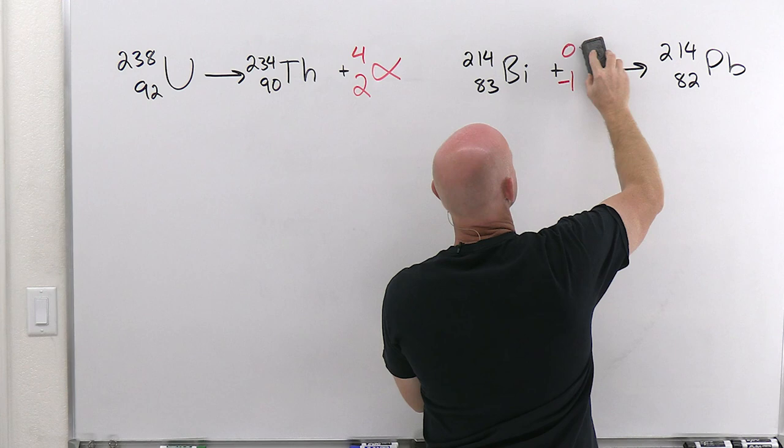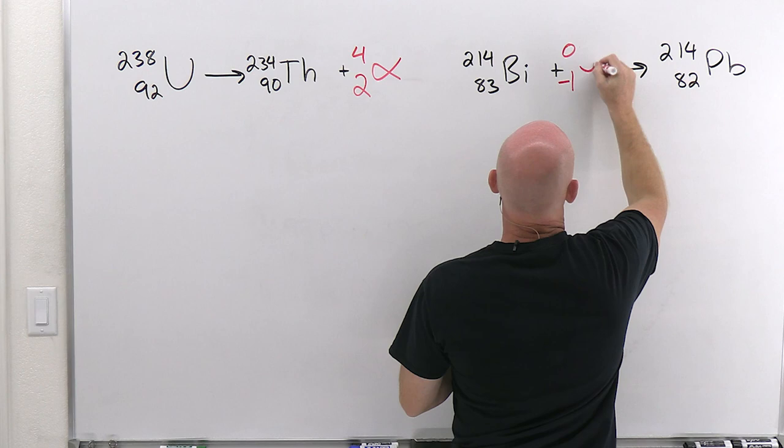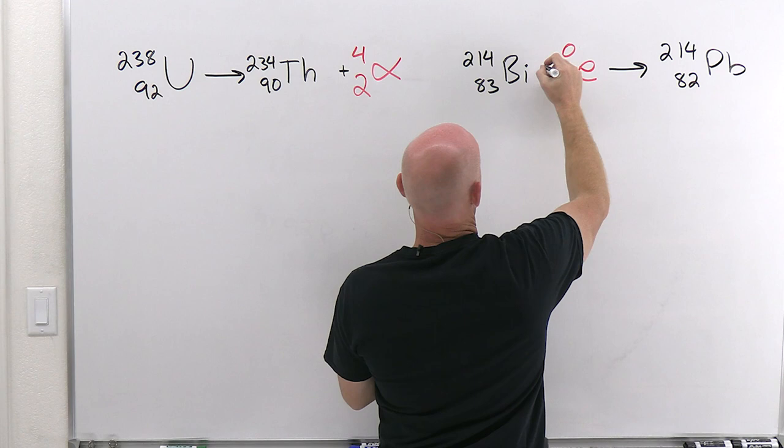And so the question is, who's got a mass number of zero and an atomic number of negative one? And that is a beta particle or electron. We'll find out customarily, it's going to be more commonly written—let me get that plus sign out of there so it doesn't look like it's part of it.